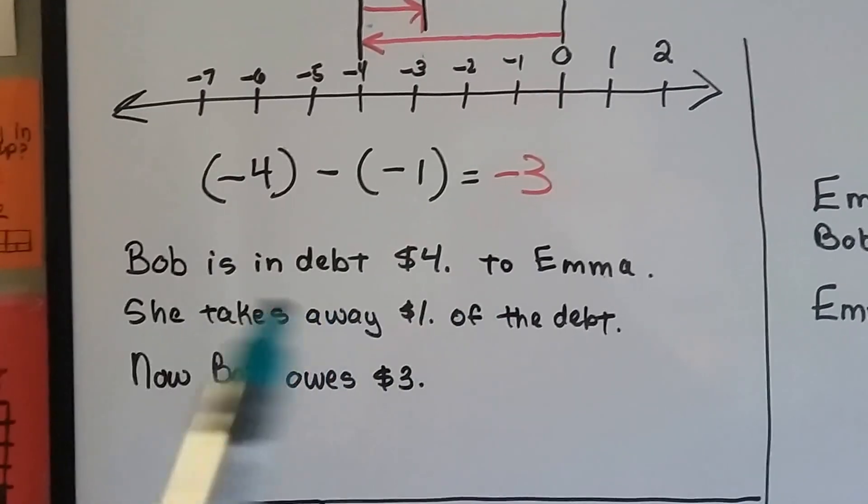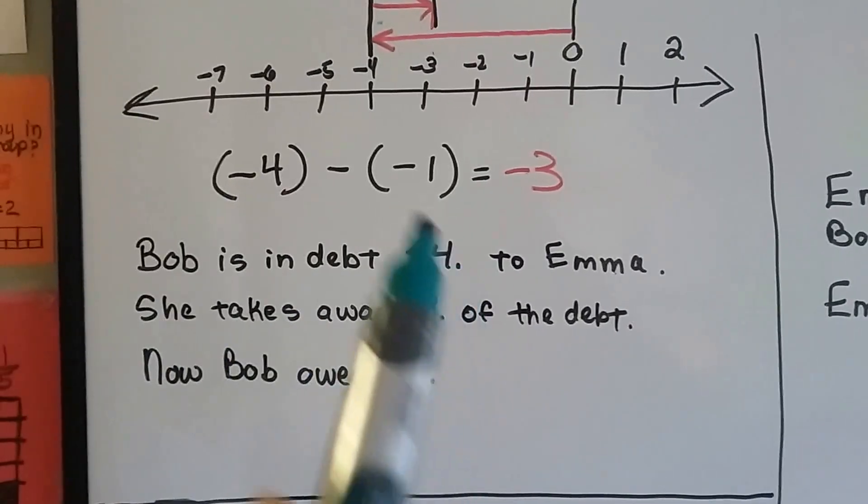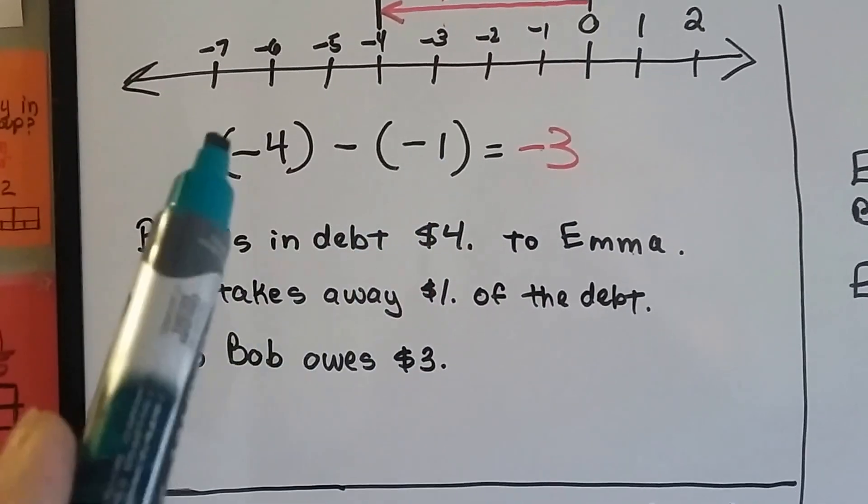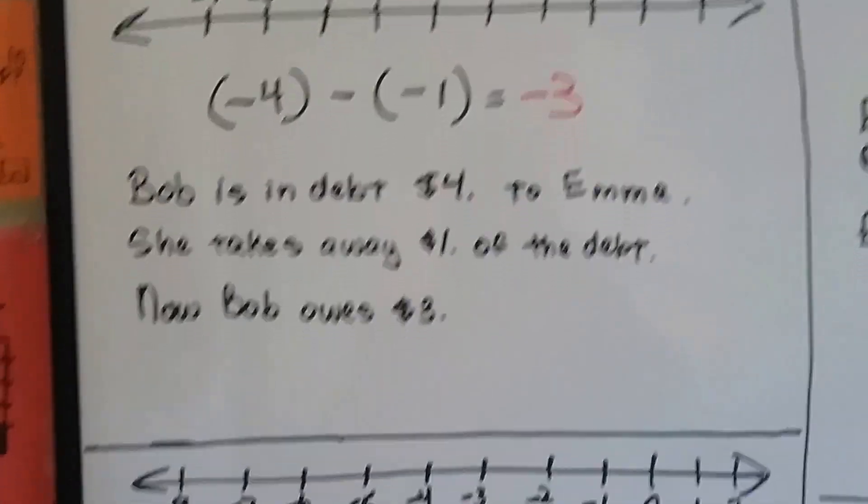So, now he just owes her $3. Maybe he did her a favor. Maybe he helped her carry something and she said, tell you what, you don't owe me $4, you only owe me $3. I'm going to take away a dollar of the debt.